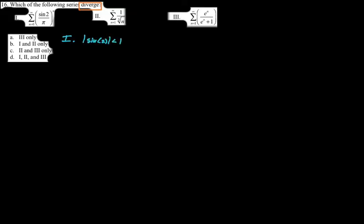Number 16: which of the following series diverge? I have to keep that in mind since I'm inclined to think all series questions are about convergence. Number one is sine of 2 over pi to the n. The absolute value of sine of 2 is less than one, so the absolute value of the ratio is less than one — this is geometric and it converges. Since the question asks about diverging, this is not the answer.